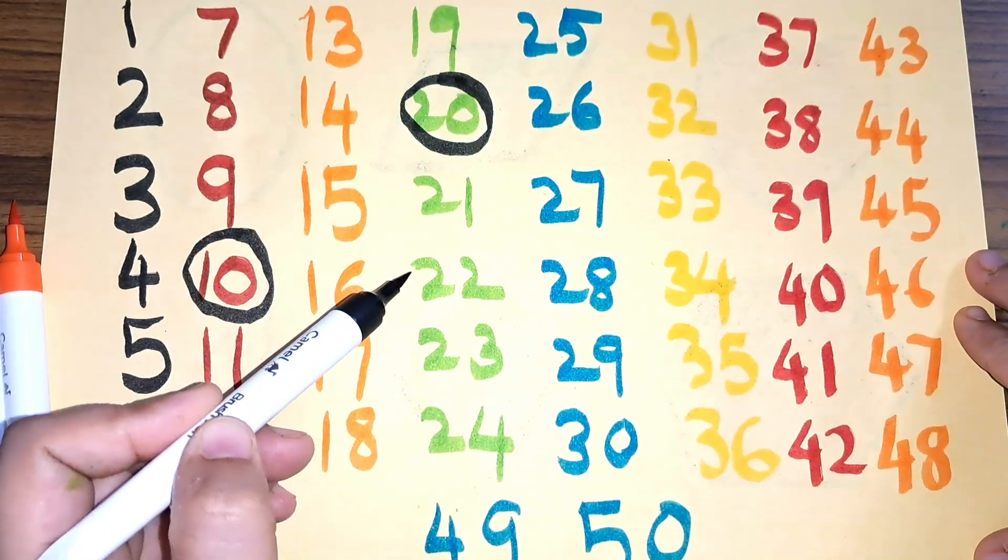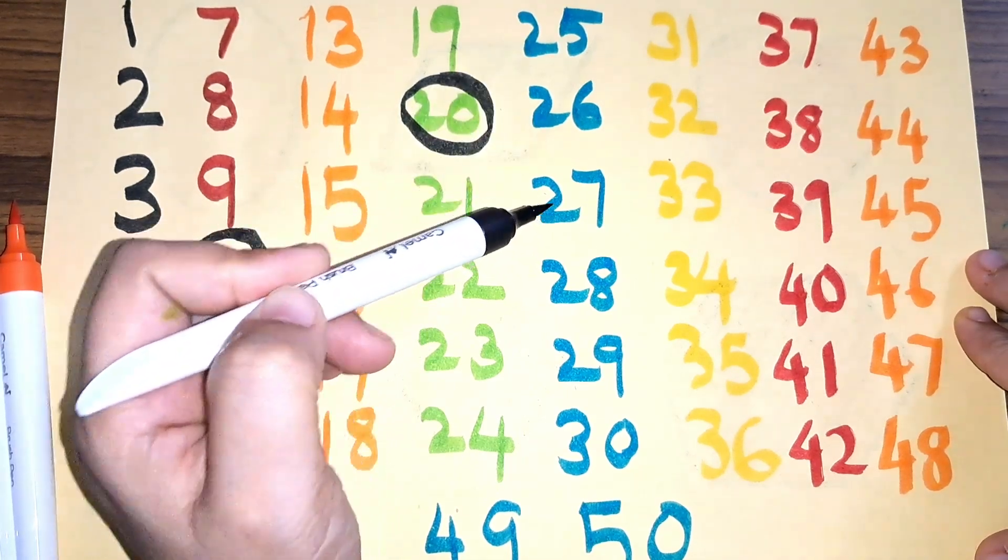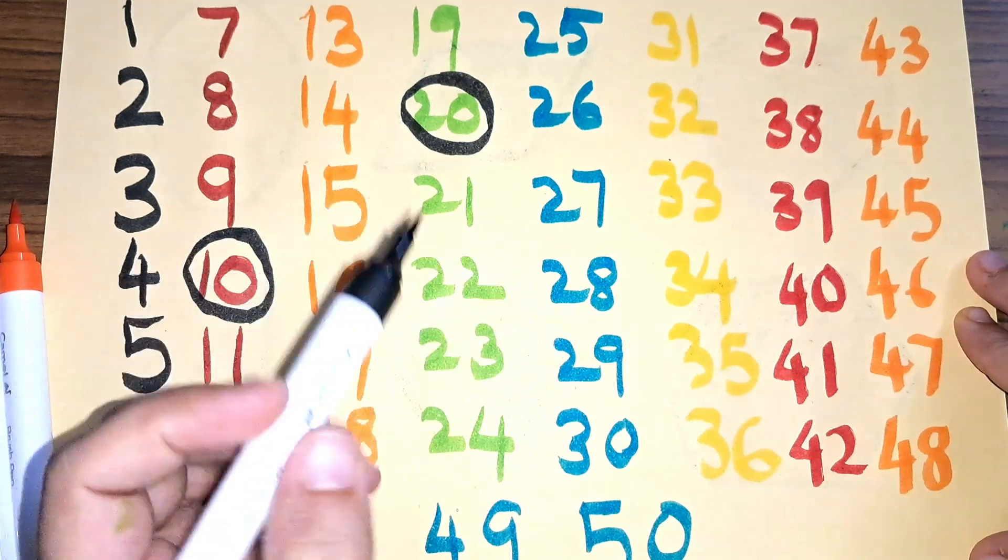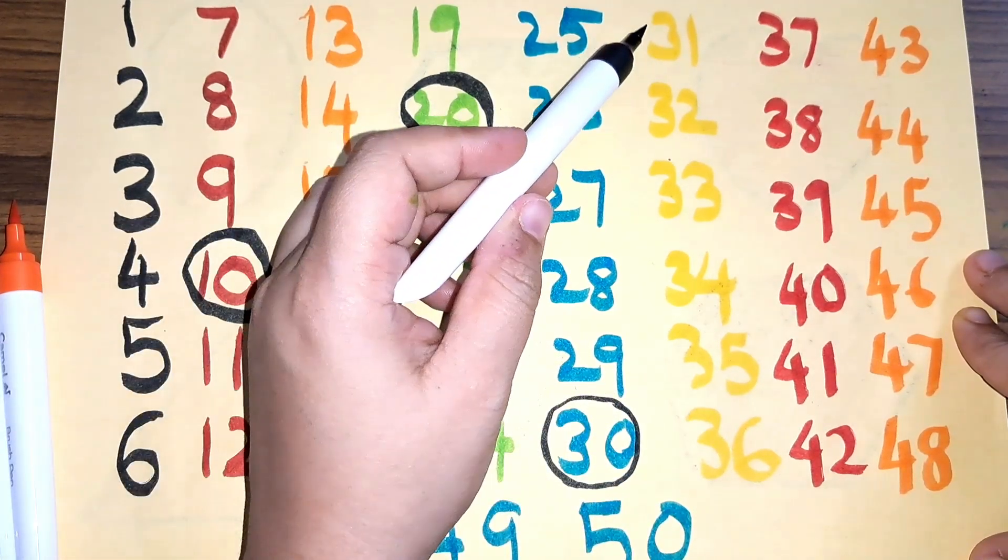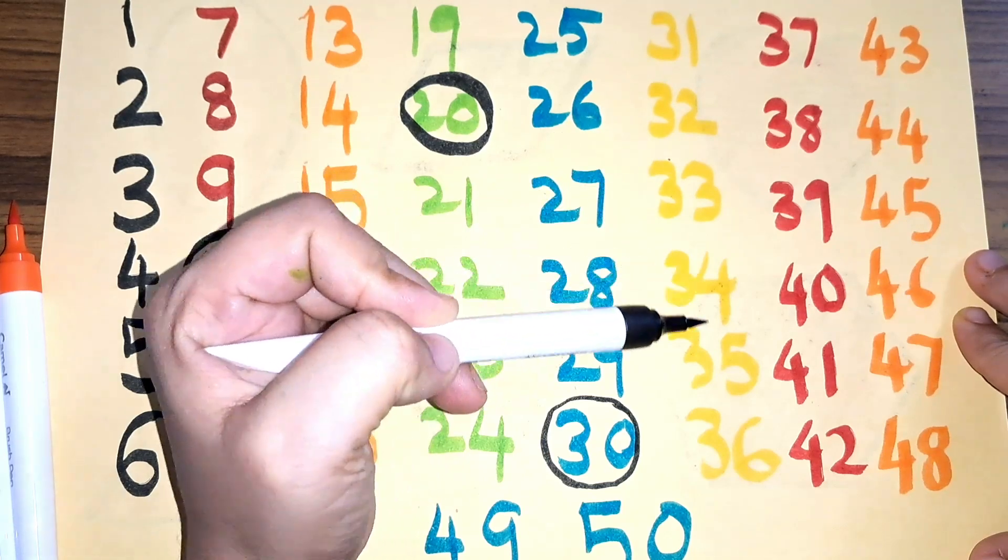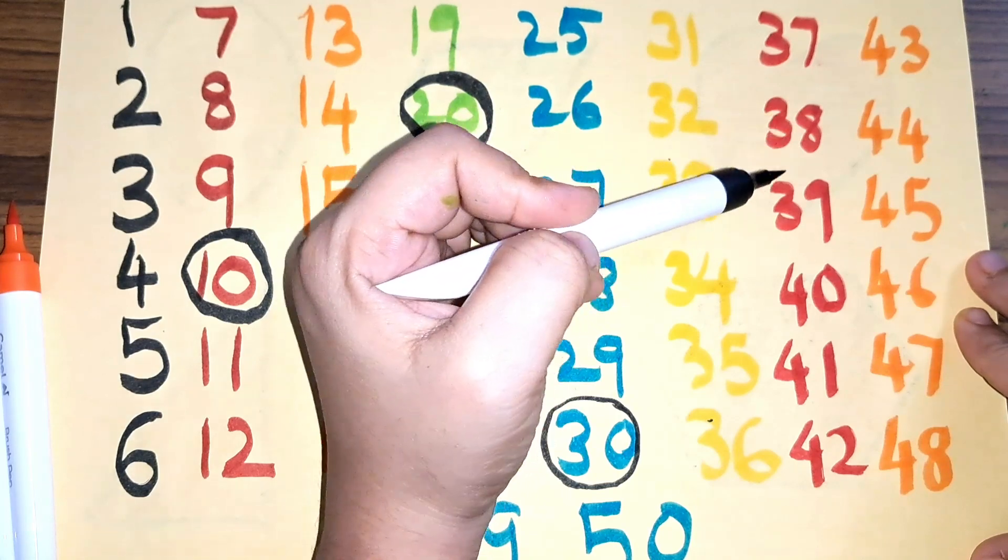Twenty-one, twenty-two, twenty-three, twenty-four, twenty-five, twenty-six, twenty-seven, twenty-eight, twenty-nine, thirty, thirty-one, thirty-two, thirty-three, thirty-four, thirty-five, thirty-six, thirty-seven, thirty-eight, thirty-nine.